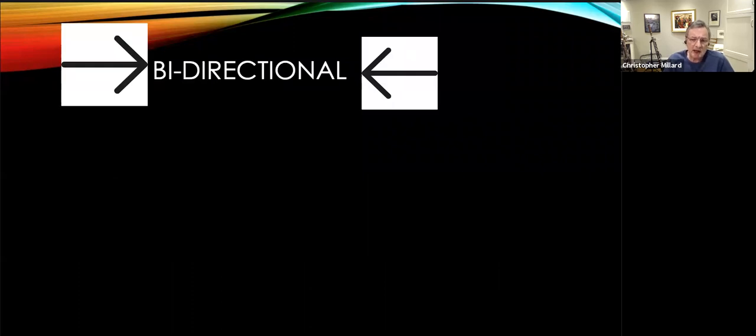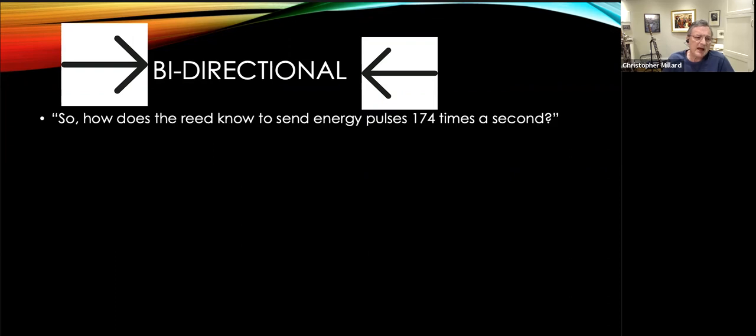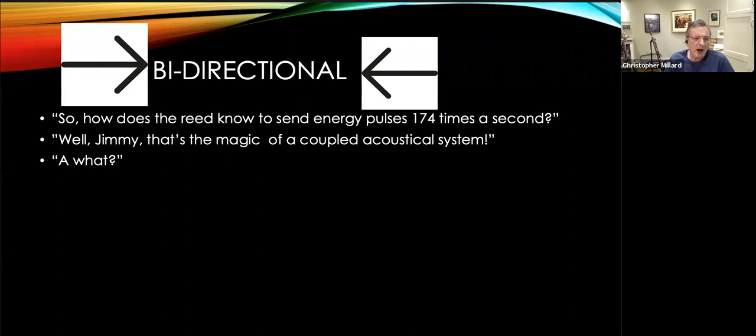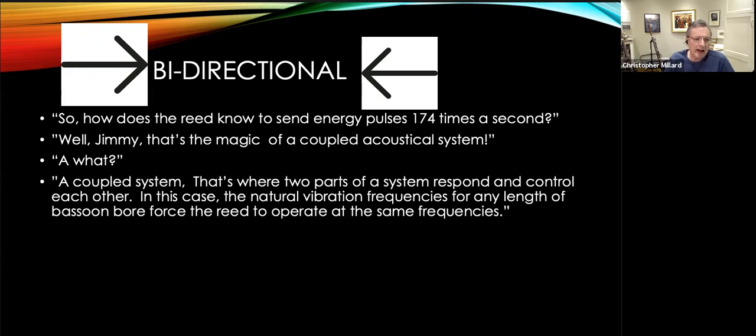We'll continue the conversation. Jimmy asks, you mean that the reed is opening and closing 174 times a second when you play an F? And that's right. But how does the reed know it should vibrate 174 times a second? Why not 263 times a second? Well, Jimmy, here's the key. The reed's operation is controlled by the variations in pressure in the bore of the instrument. And how does the bassoon know to operate 174 times per second on an open F? Well, it's a lot like a violin string, where length and tension determines pitch. That length of bassoon bore has a natural tendency to get excited by repeated energy inputs at 174 times per second.